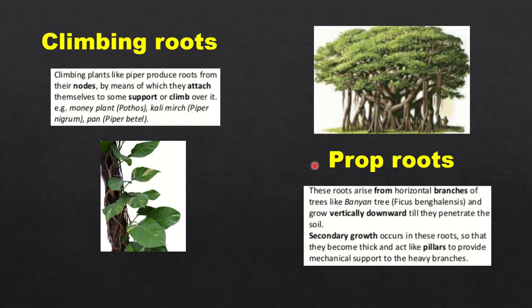Coming to prop roots. These roots arise from horizontal branches of trees like the banyan tree, popularly known as Ficus bengalensis, and grow vertically downward until they penetrate the soil. Secondary growth occurs in these roots so that they become thick and act like pillars to provide mechanical support to the heavy branches.